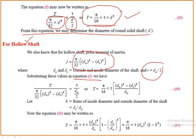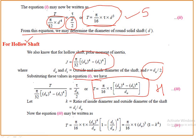K is defined as the ratio of inside diameter to outside diameter of the shaft: K = dI/dO. Many times in examinations the value of K is also given. By putting this value, the equation for torque becomes T = π/16 × τ × dO³ × (1 − K⁴) for a hollow shaft.